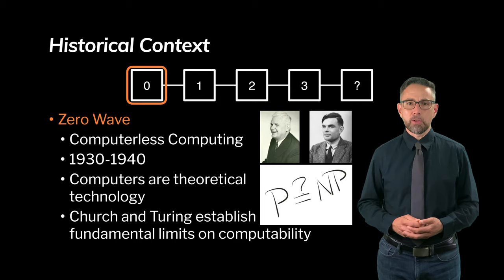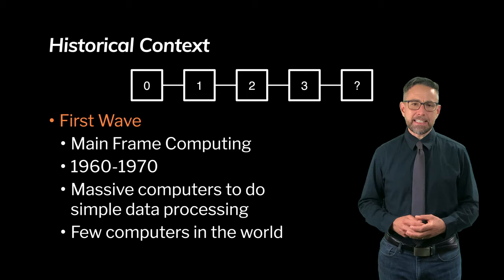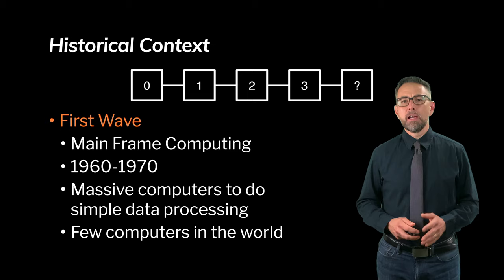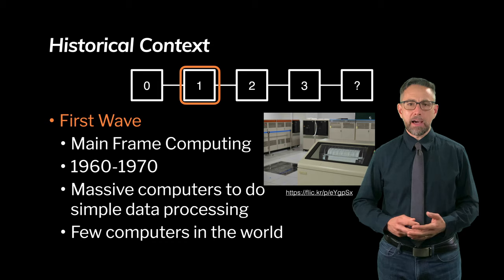Weiser introduced an idea of the first wave, and the first wave centered around mainframe computing, giving it a rough time frame about 1960 to 1970. In this world there were massive computers doing simple data processing but there were very few computers in the world. Here's a picture of a mainframe with a dot matrix printer in front of it, one of the main ways in which you got output out of these computers.